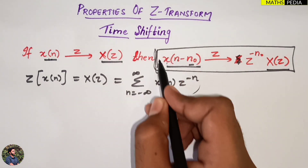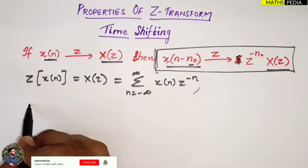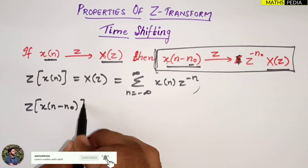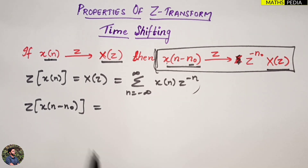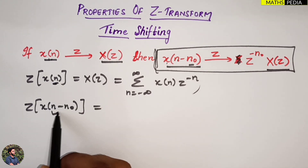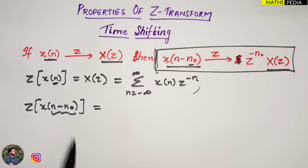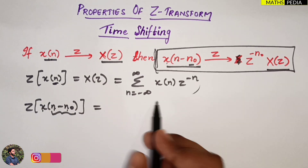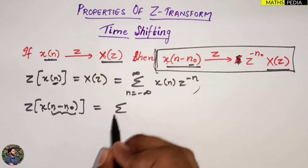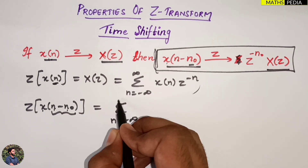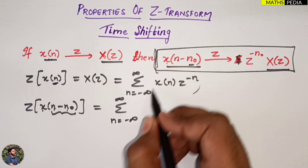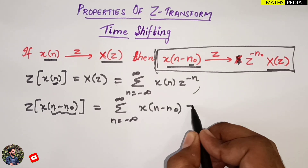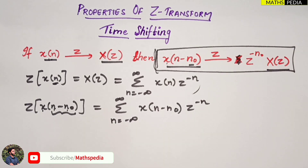Now we have to find the Z-transform of x(n minus n-naught). In place of x(n), I have to replace it with x(n minus n-naught). So this formula will become: summation from n equal to minus infinity to infinity of x(n minus n-naught) into z power minus n.